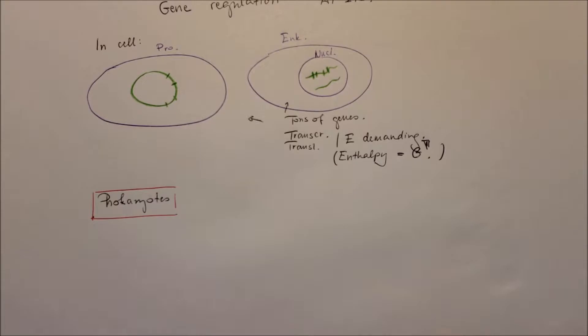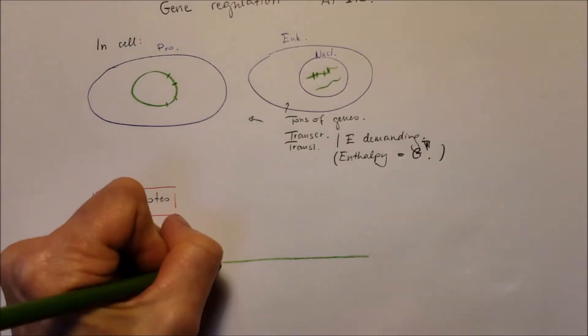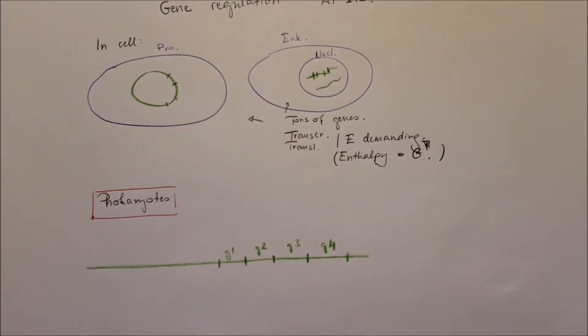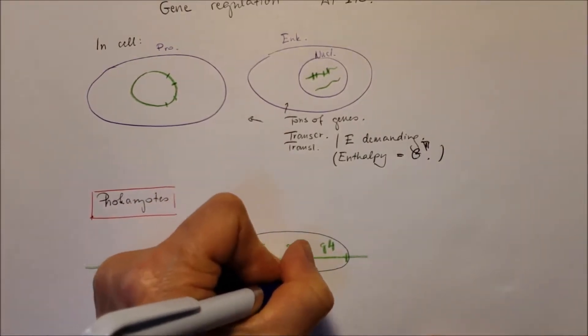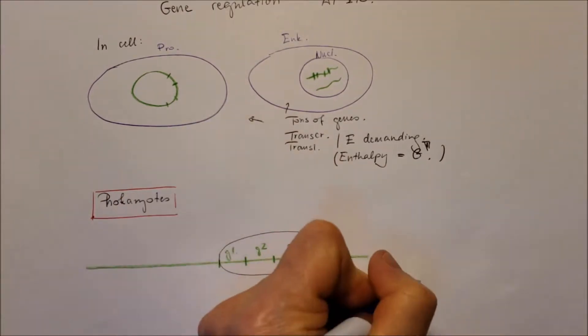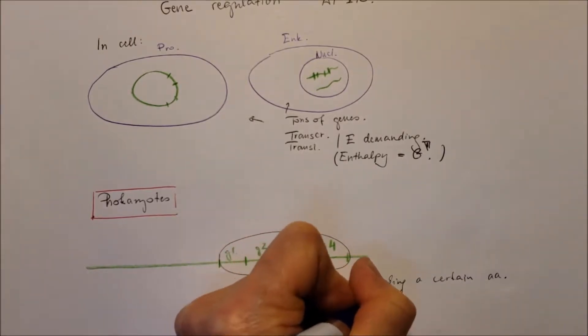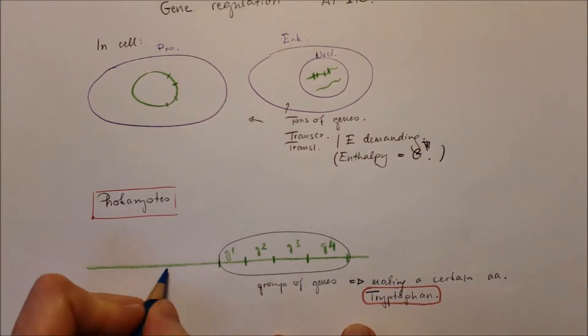So let's focus on the prokaryotes. First, there's a DNA segment and on the segment there are a couple of gene segments right after each other. These group of genes are responsible, for example, making a certain amino acid, producing enzymes that facilitate the amino acid making such as tryptophan. This is an important amino acid for protein synthesis.